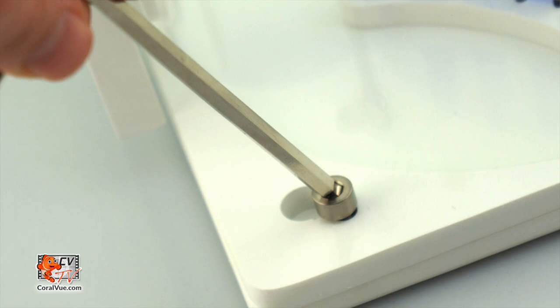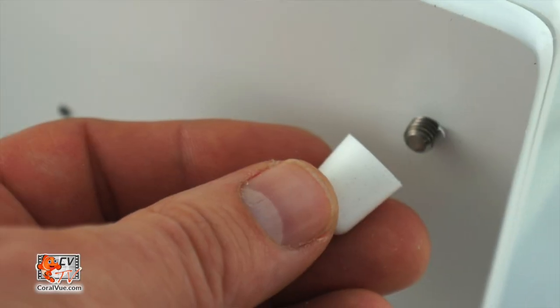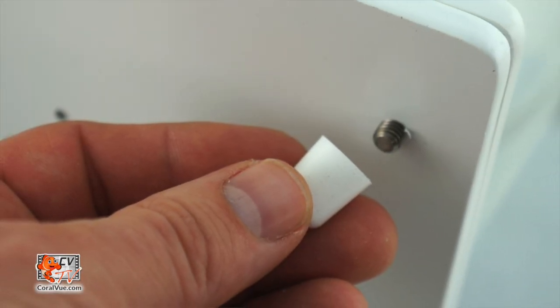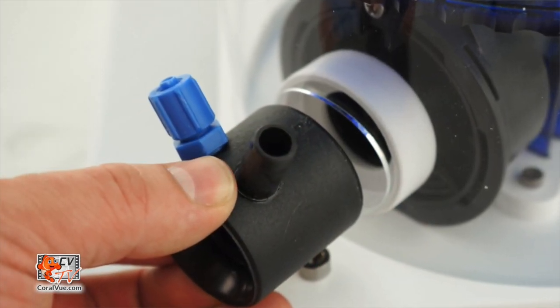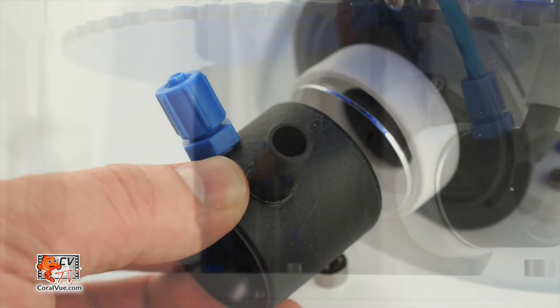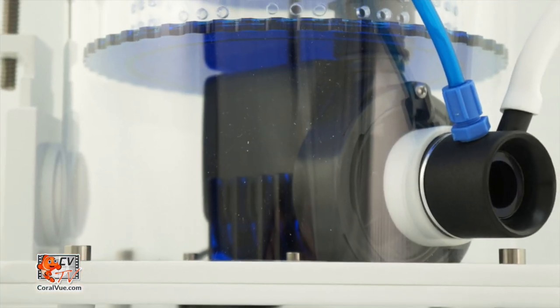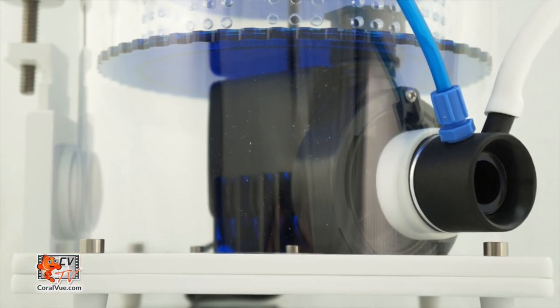Tighten all screws and push the white vibration absorbing feet onto the four screw heads on the bottom of the skimmer. Insert the venturi through the hole that is lined up with the intake of the skimmer pump. The venturi will insert into the white coupling on the intake of the pump.